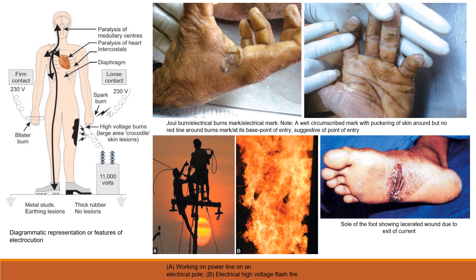The entry point is generally where we handle objects carrying electricity. Rarely does it enter through the back, head, or legs; once it enters, the electricity exits through the sole of the foot. Exit injuries are visible on the foot. Flash burns occur when high voltage exceeding 11,000 volts — such as from electric poles — causes the person to directly experience flash fire, resulting in thermal and direct hyperthermal injuries.